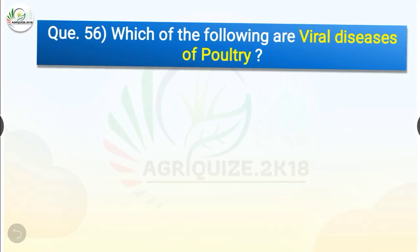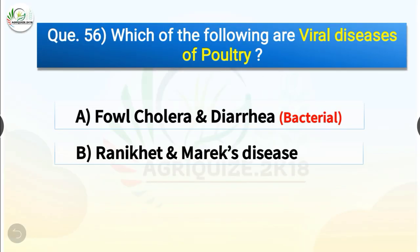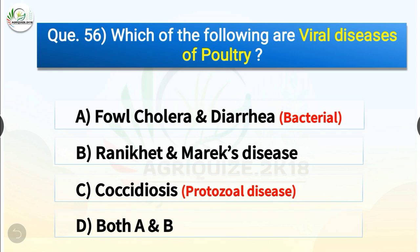Question number 56. Which of the following are viral diseases of poultry? The options are Fowl Cholera and Diarrhea, Ranikhet and Marek's disease, Coccidiosis, or both A and B. The correct answer is option B, Ranikhet and Marek's disease. So Ranikhet and Marek's disease are viral diseases of poultry. Fowl Cholera and Diarrhea are bacterial diseases and Coccidiosis is a protozoal disease.